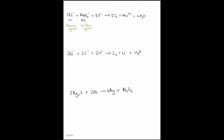Moving on to the next example: the hypochlorite OCl⁻ is becoming chloride, so that's losing oxygen — loss of oxygen is reduction — which means that the iodide ions are again being oxidized. In terms of the agents, the hypochlorite is the oxidizing agent and the iodide ions are the reducing agent.